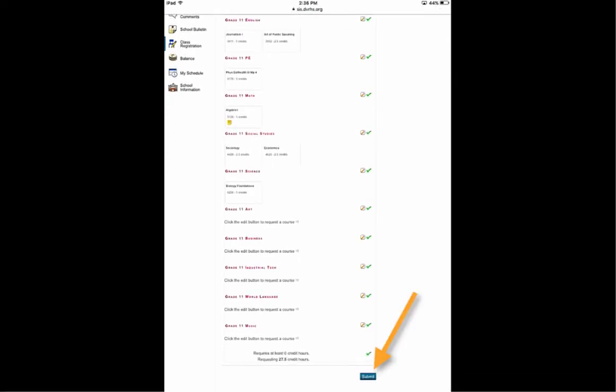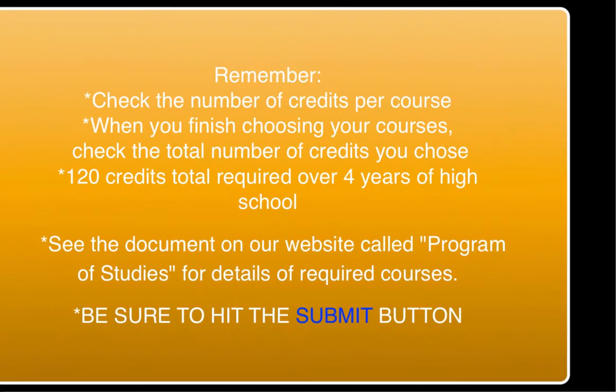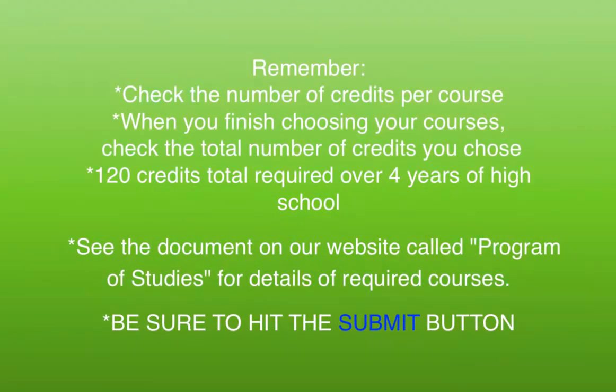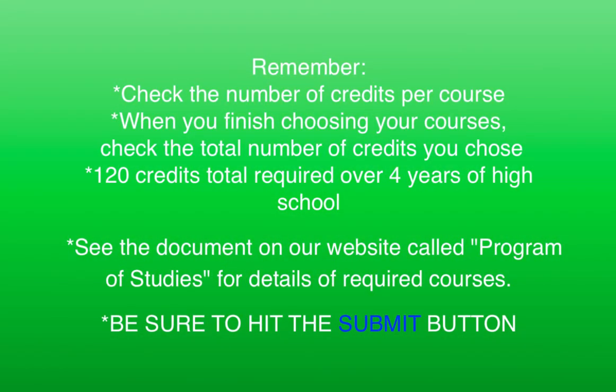When you're finished with all your selections, be sure to click the Submit button. It is recommended that you take about 35 credits per year, except for your senior year, which will vary depending on how many courses you need to take to graduate.